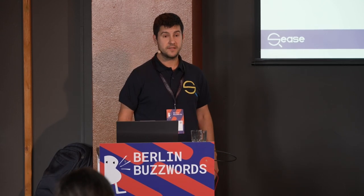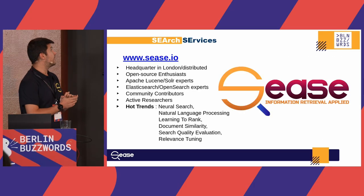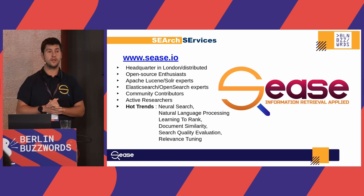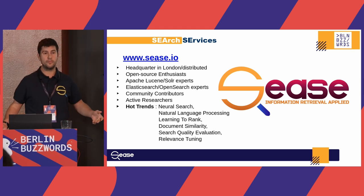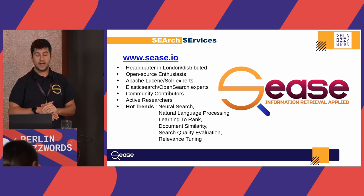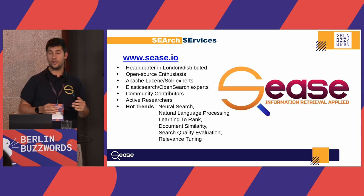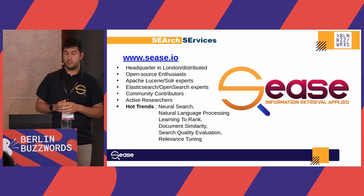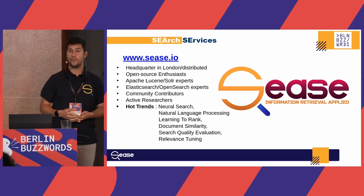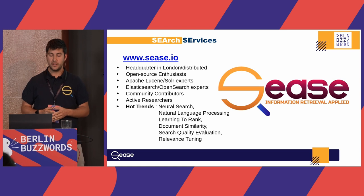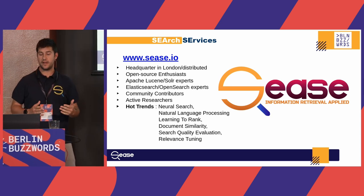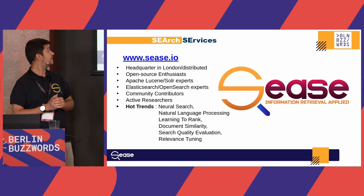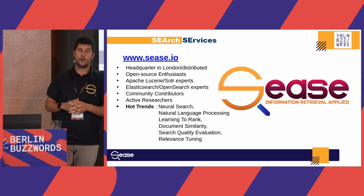I'm passionate about algorithms and data structures, so I always love to experiment with new things and new technologies. CIS is a company that works with search services. We are headquartered in London, spread around Europe and the Middle East, and we are experts in Lucene, Solr, Elasticsearch, and OpenSearch. We always love to contribute back to the community through open source contributions, blog posts, and talks. We are actively researching to reduce the gap between academia and industry.